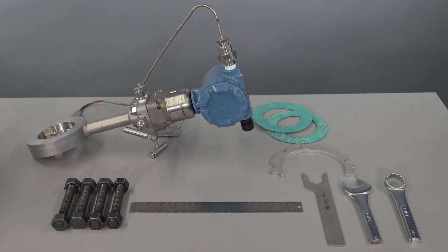These are the tools needed: bolts, a ruler, wrenches, a centering ring, gaskets, and a flow meter.